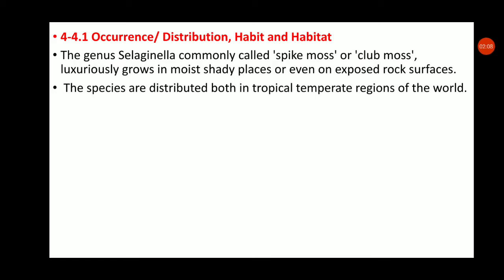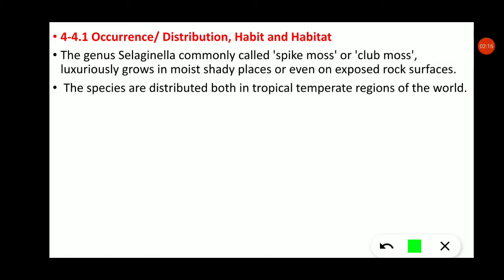The species are distributed in both tropical and temperate regions of the world. The whole world is divided into tropical, temperate, and polar regions. Selaginella is found in the tropical and temperate regions, occurring in countries such as India, Brazil, South Africa, and China, as well as in England and Sweden.